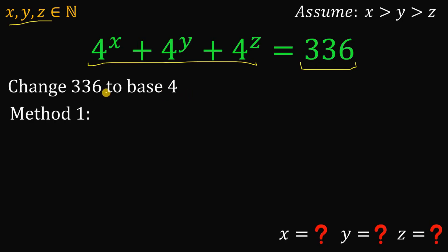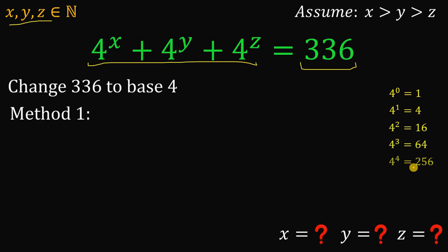Here's the first method to convert this number to base 4. We need to familiarize ourselves with the powers of 4: 4 raised to 0 is 1, 4 raised to 1 is 4, 4 squared is 16, 4 cubed is 64, 4 raised to the 4th power is 256, and 4 raised to the 5th power is 1024. We will stop here because 1024 is too big for 336.